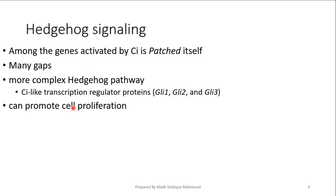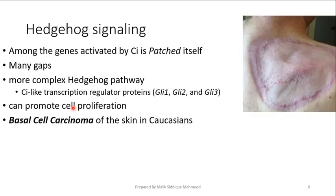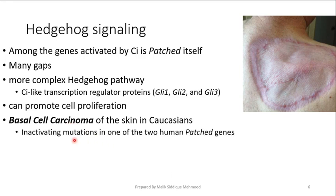The pathway mostly promotes cell proliferation. So if the expression is more and more, then obviously the pathway activation is more and more. The cells become multiple cells and ultimately it can lead to cancer. Basal cell carcinoma is the result. In Caucasians, if the Patched gene has mutations and becomes inactivated, then this type of carcinoma will develop.